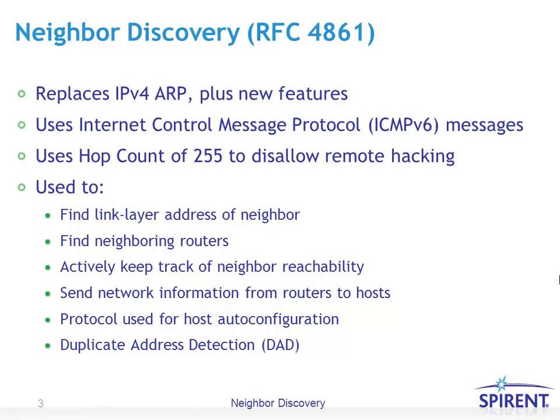So what is Neighbor Discovery? Neighbor Discovery is defined by RFC 4861. It's a protocol that replaces IPv4's ARP, or Address Resolution Protocol, plus it adds many new features. It uses the ICMPv6 messages as described in the previous topic as its basis for its protocol exchange.